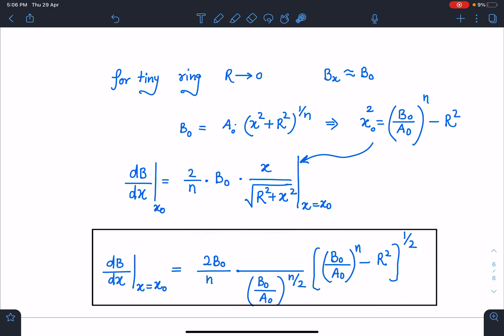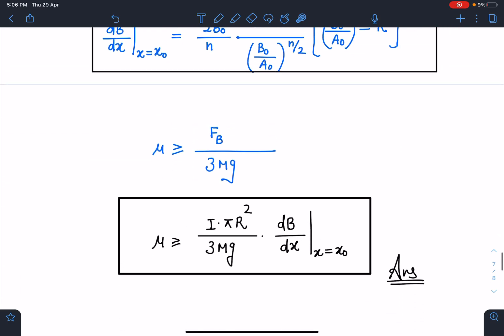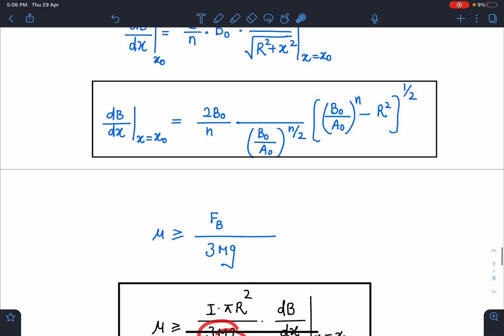So this to be 2B₀/n divided by (B₀/A₀)^(n/2) times [(B₀/A₀)ⁿ - r²]^(1/2), this is going to be the dB/dx. Now if I substitute this value here, I am going to get this μ limiting as iπr²/(3Mg) times this value. So this is going to be the limiting value of μ.